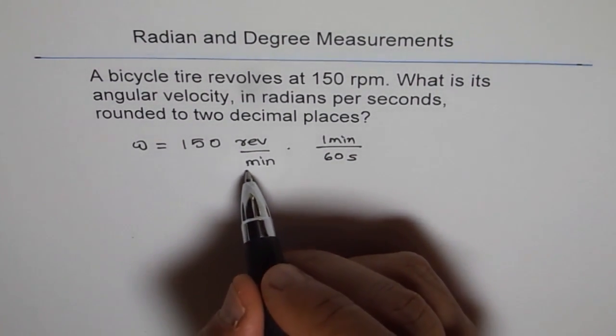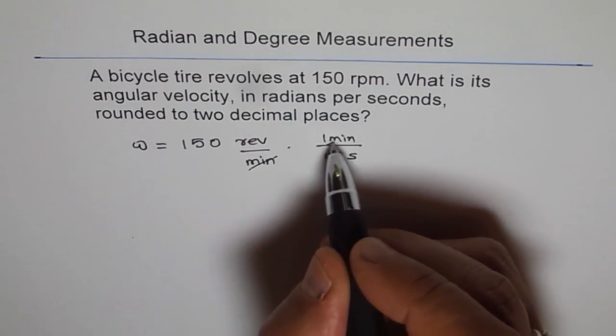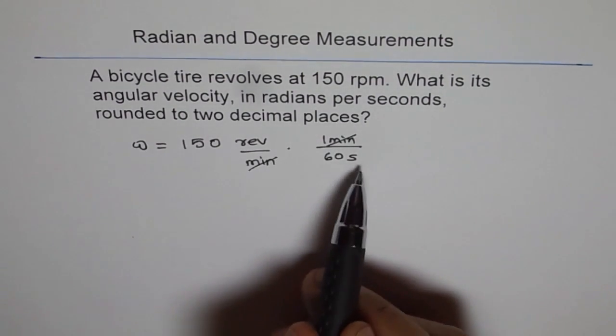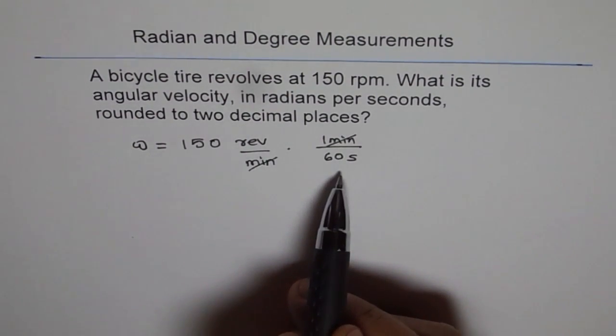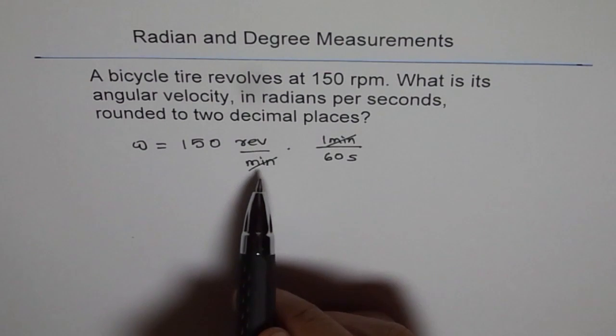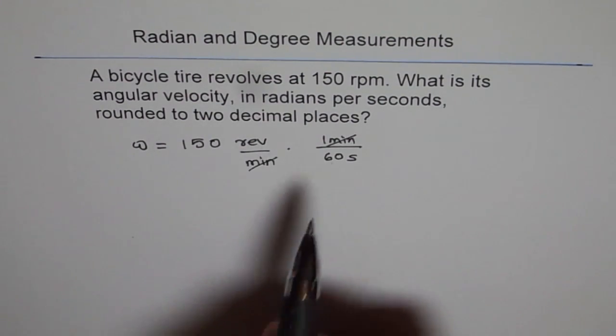Now you'll notice minute and minute will cancel out. So you've got revolutions per second. Do you see that? So we converted our unit from revolutions per minute to revolutions per second.